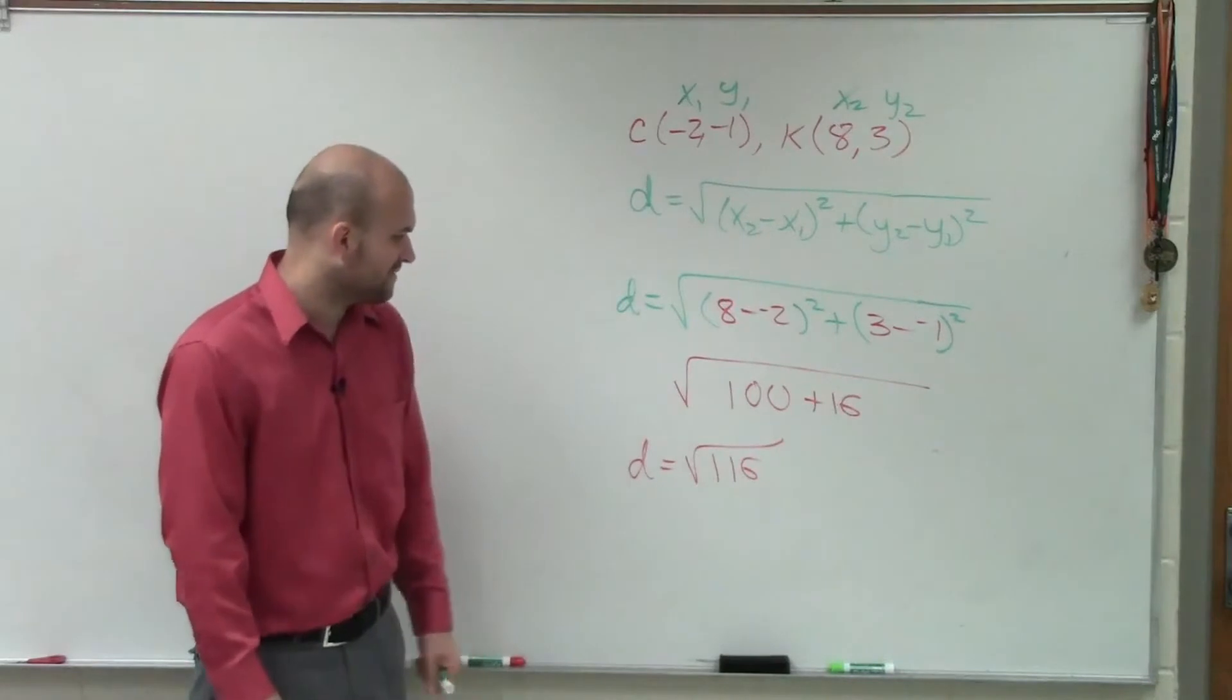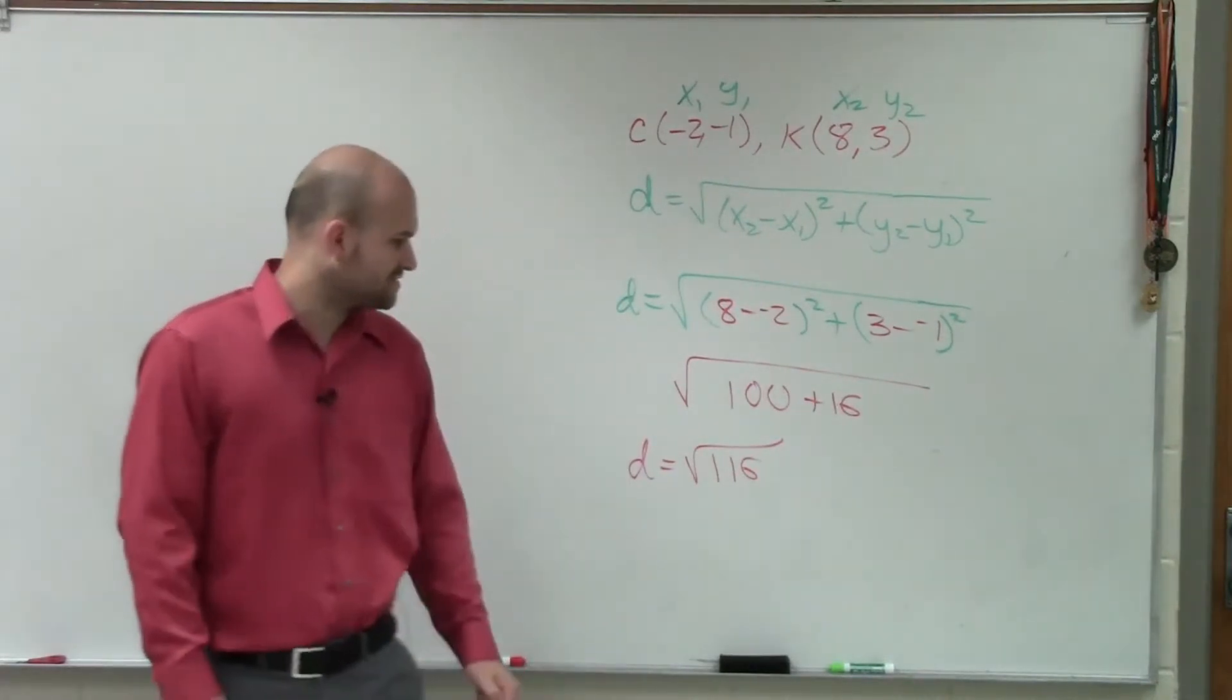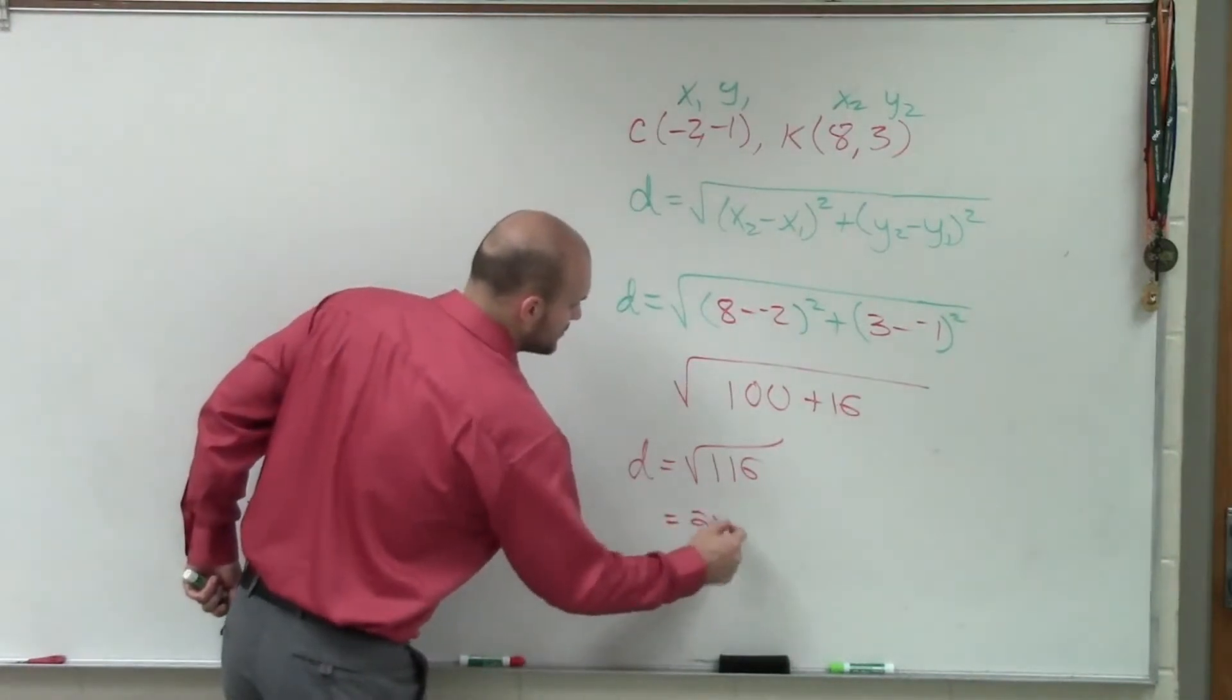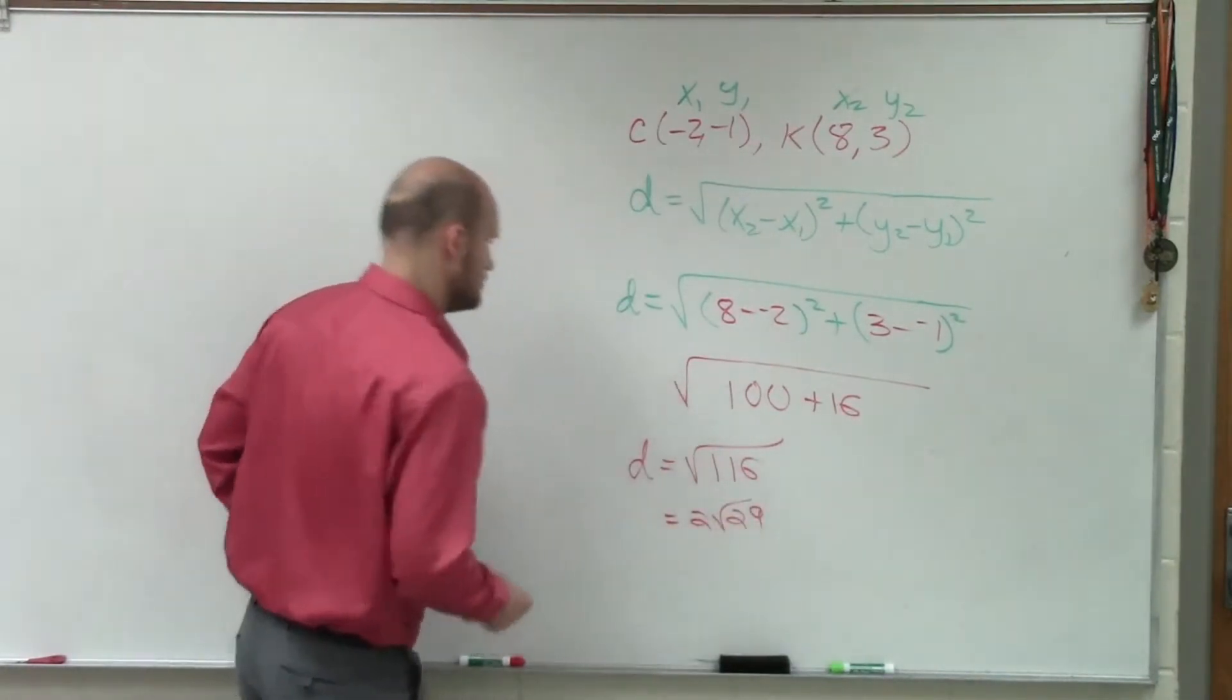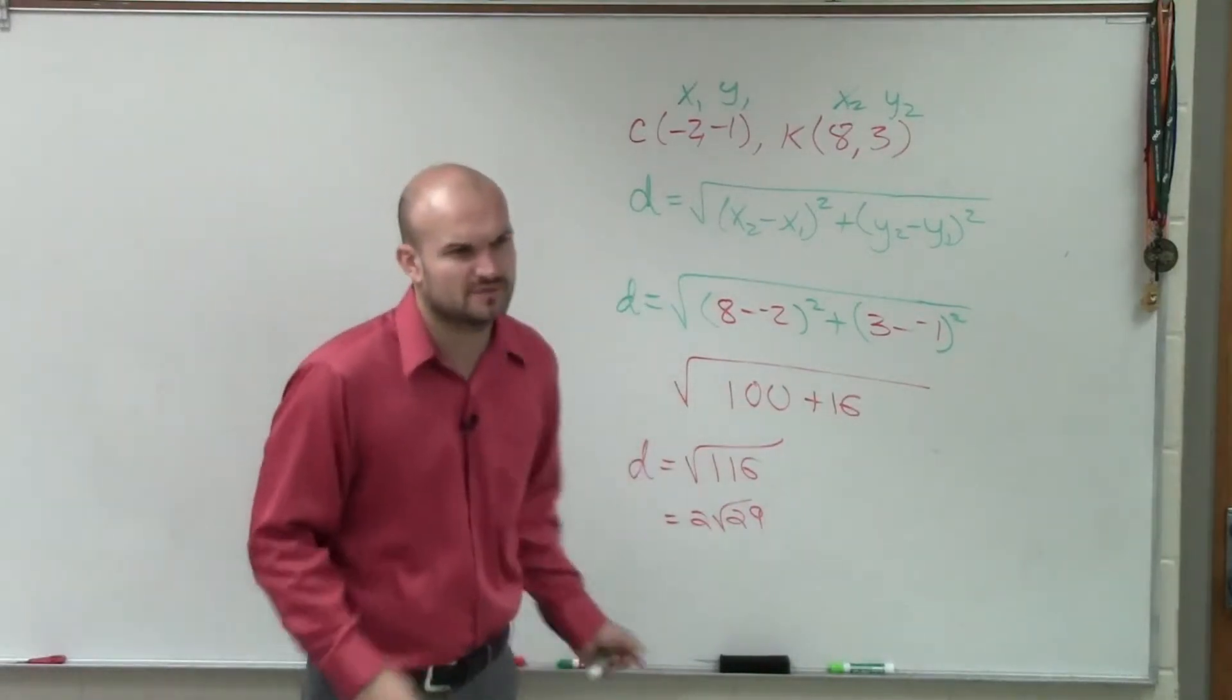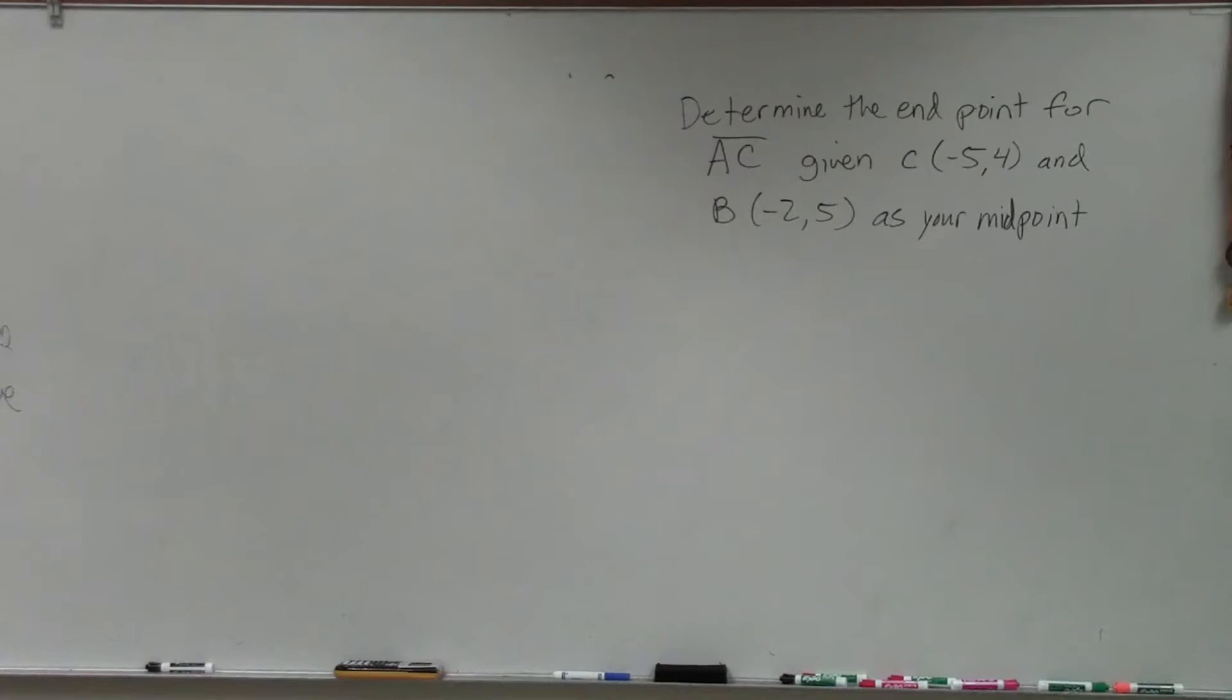But I do believe I could take out a 4, that would mean the square root of 29. So I'm going to just write out the answer. I believe it could be 2 square root of 29. I believe, I have to go and double check.